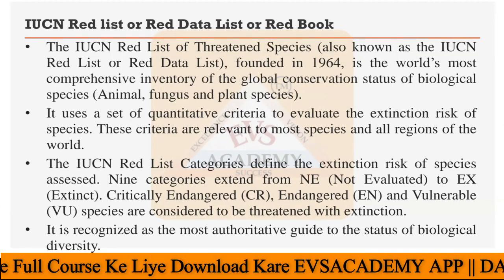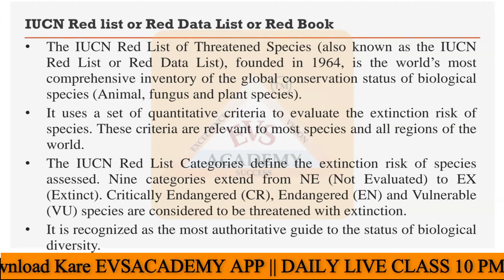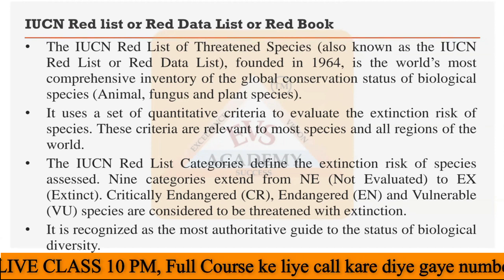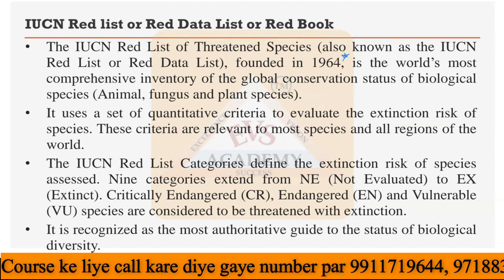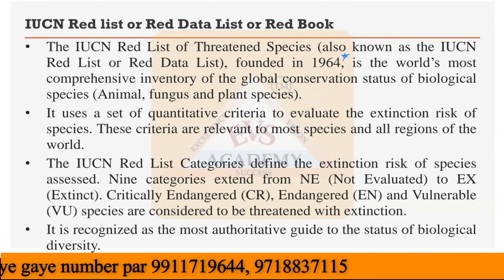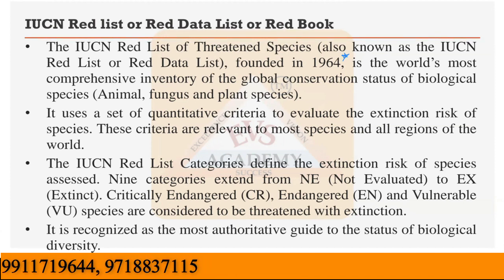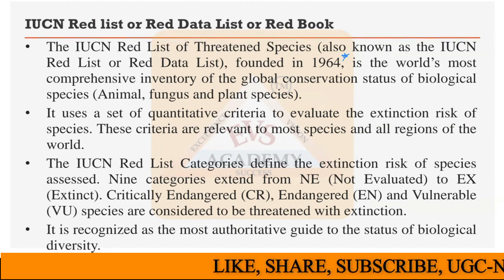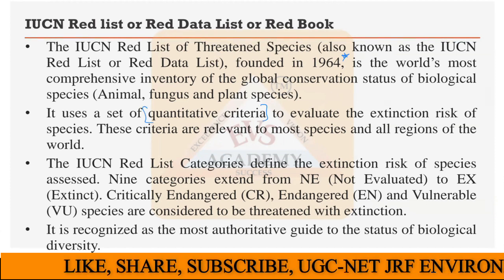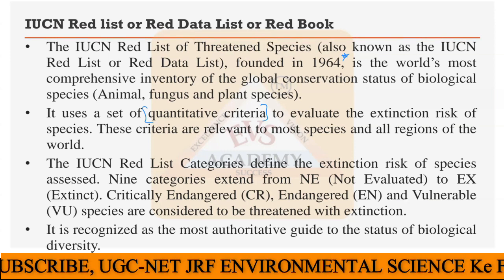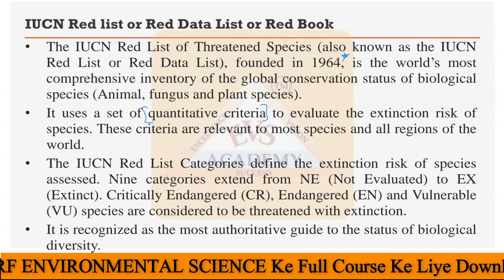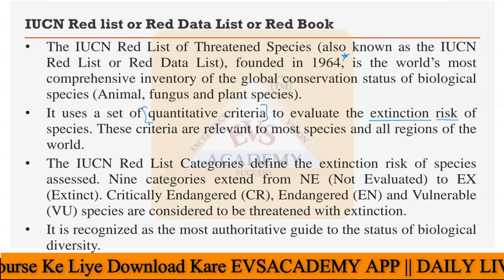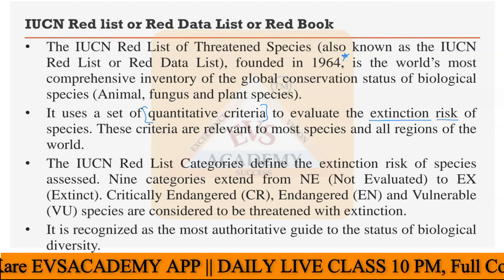Now, the Red Book or Red Data List is maintained by the IUCN and is known as the IUCN Red List or Red Data List. Started in 1964, it is the world's most comprehensive inventory of the global conservation status of biological species — including animals, fungi, and plant species. It uses a set of quantitative criteria to evaluate the extinction risk of species. If a species is very near to extinction, it is placed in a more severe category of the Red Data List.